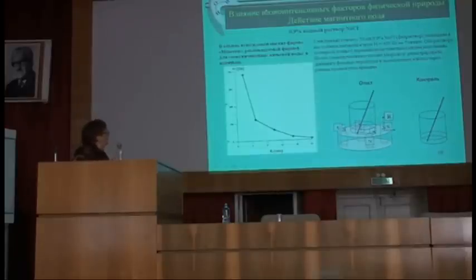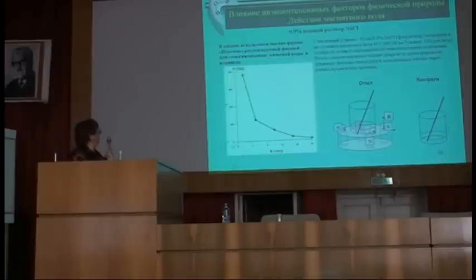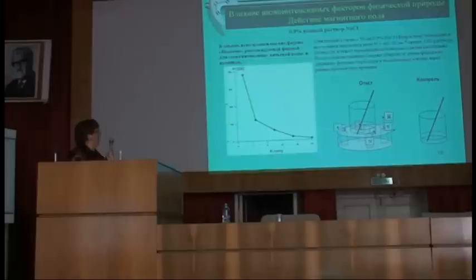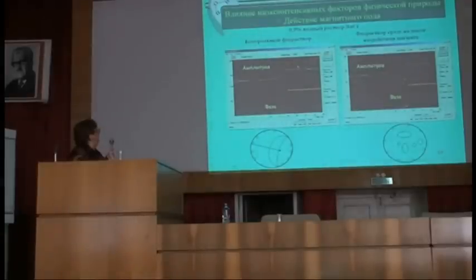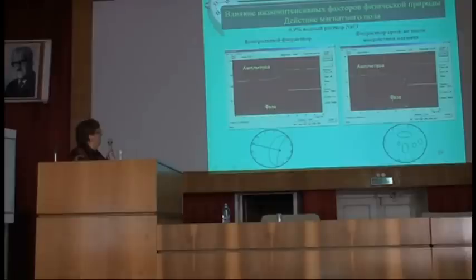Была проведена серия экспериментов с воздействием магнитного поля. Мы использовали магнит формы Nevatron, рекомендуемый для намагничивания питьевой воды и напитков. Стеклянный стакан с 50 мл физраствора помещали в постоянное магнитное поле напряжённостью 400 гаусс на 5 минут. Оба раствора — контроль и опыт — перемешивали пластмассовыми палочками. После омагничивания магнит убирали и регистрировали динамику фазовых переходов в высыхающих каплях через равные промежутки времени. Мы видим всплески на кривых.